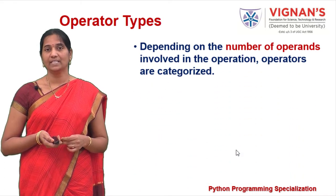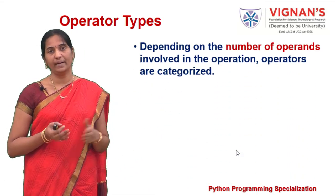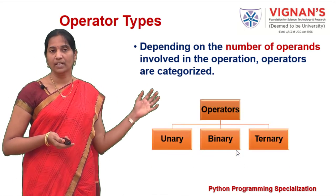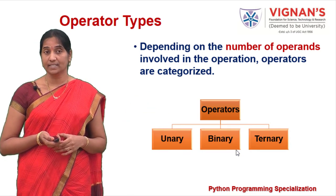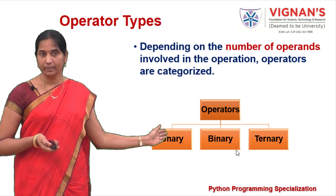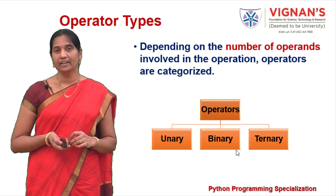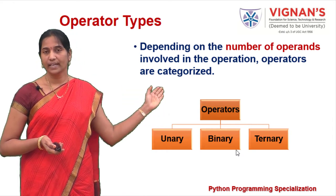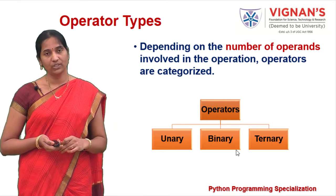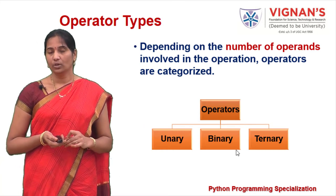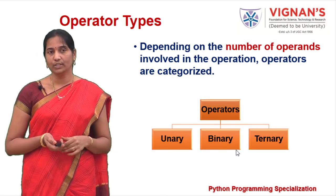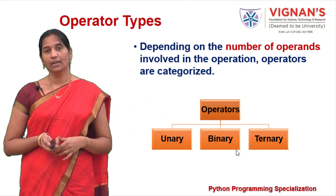Operators can be divided into categories depending on the number of operands involved. Unary operators involve only one operand. Binary operators involve two different operands. Ternary operators involve three different operands. That's how operators can be classified as unary, binary, and ternary.